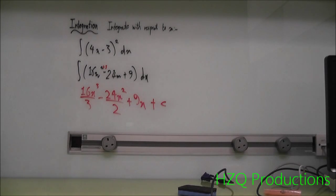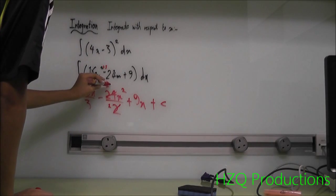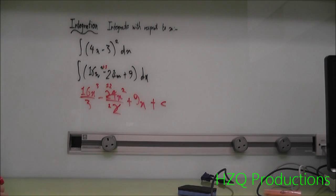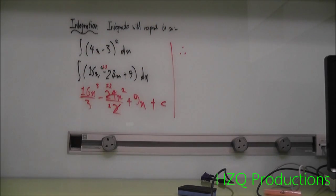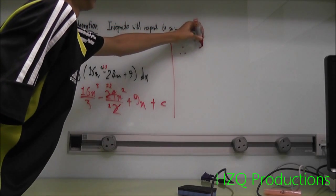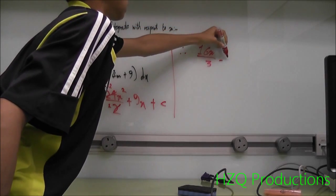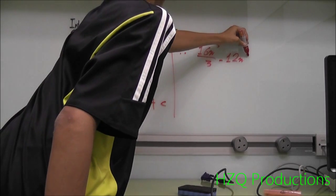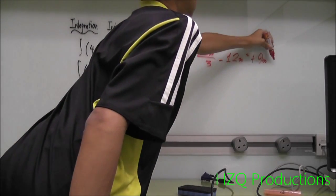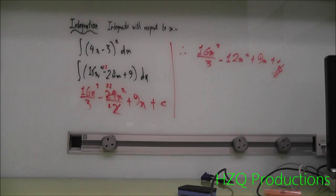Now, check that if you can still simplify. That is, you can't simplify this. But you can simplify this. So, this is 2 times 12 is going to be 4. So, actually. Therefore. It's actually 16x cubed over 3. Minus 12x squared. 12x squared. Plus 9x. Plus c. There you go. This is your final answer.